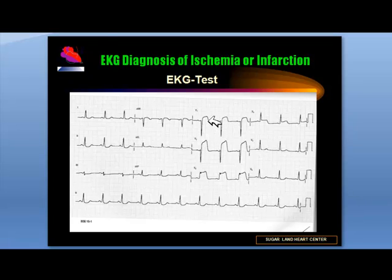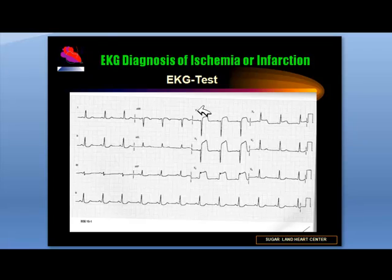As you can see in leads V1, V2, V3, and V4, there is significant ST elevation from the baseline. The T wave is lifted upwards, suggesting the hyperacute phase of an acute anteroseptal myocardial infarction. When leads V1 to V4 are involved, it represents anteroseptal myocardial infarction, related to occlusion of the proximal left anterior descending artery. There are tiny R waves, suggesting no development of Q waves at this present time.